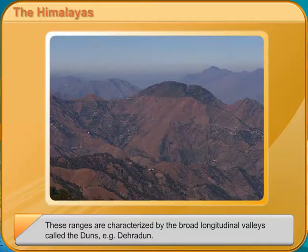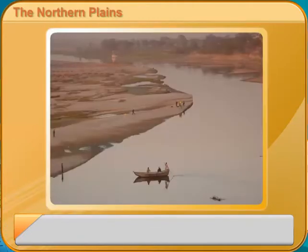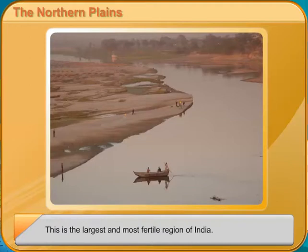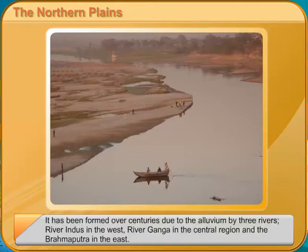The Northern Plains. This is the largest and most fertile region of India. It has been formed over centuries due to alluvium deposited by three rivers. The Indus Basin covers the states of Jammu and Kashmir, Himachal Pradesh, and Punjab.